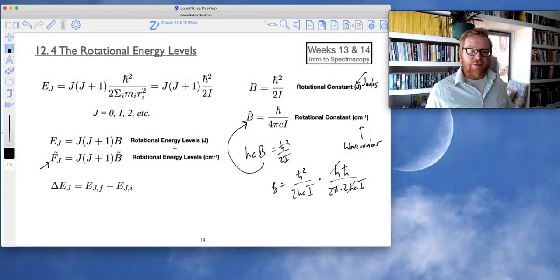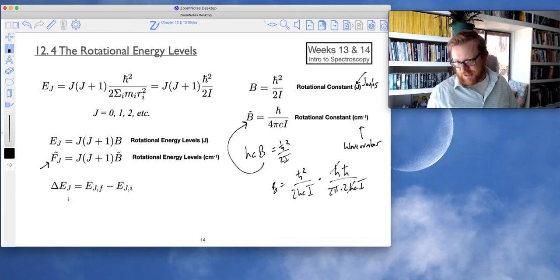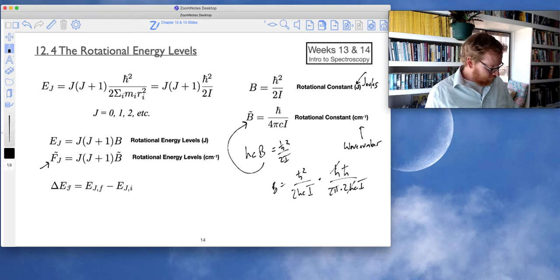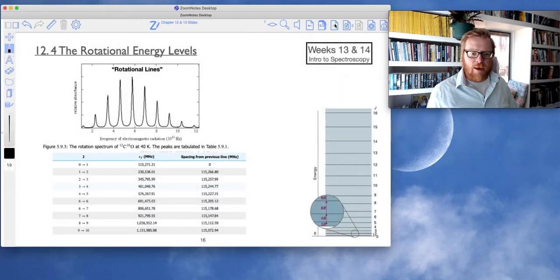So now if we look at the rotational energy levels in joules, that will be given by j times j plus 1 times b. And we'll use the letter f to denote the rotational energy levels in wave numbers. And that will be also j times j plus 1 times the b tilde, the rotational constant in wave numbers. And let's see here. And so, of course, to get an actual energy level diagram, what we recognize in spectroscopy is going to be the difference in energy levels.